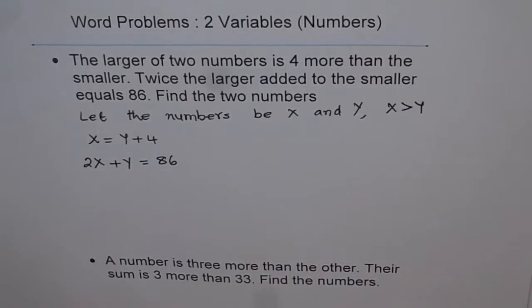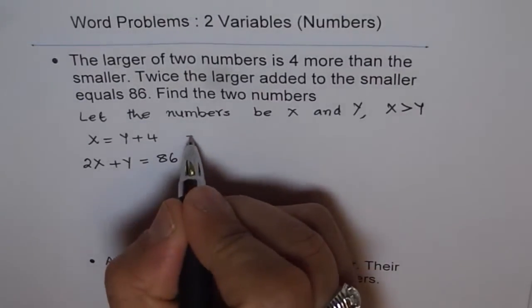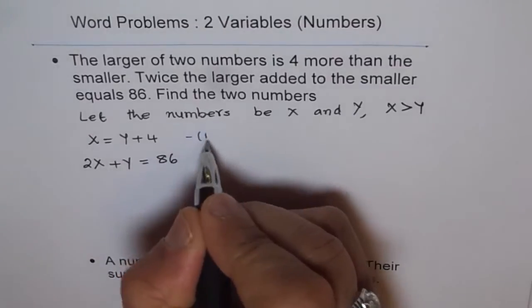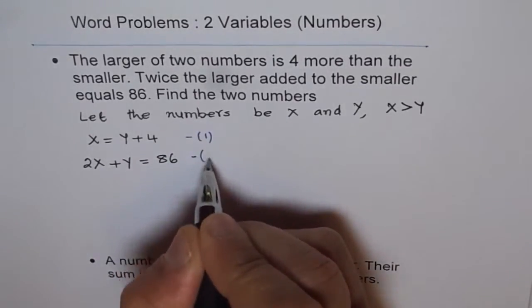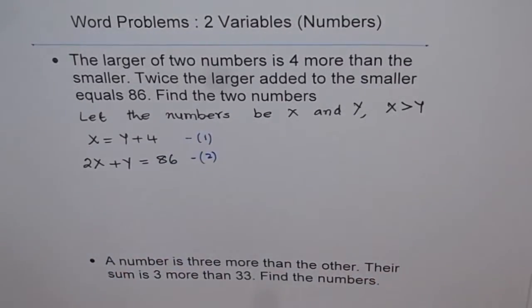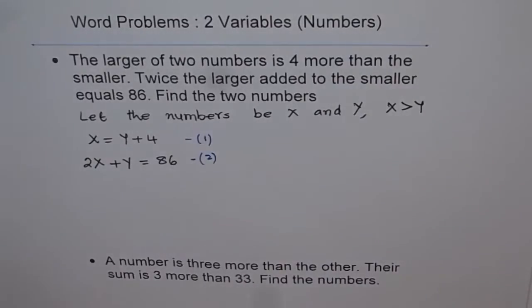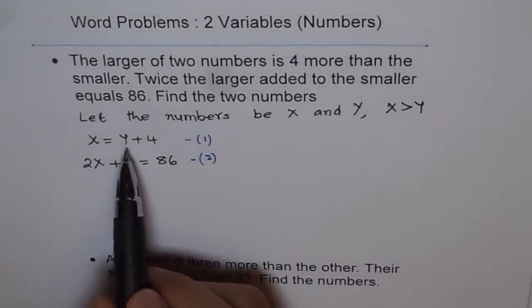Now we have two variables and two equations. And therefore, we can find the value of each variable. Let's number these equations as one and two. Now we need to solve it. And what strategy to follow to solve it?